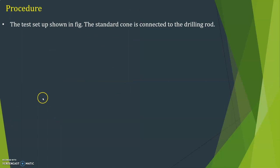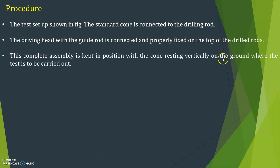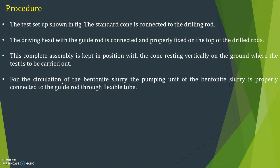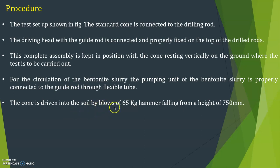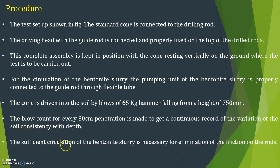To conduct the test, the standard cone is connected to the drilling rod. The driving head with guide rod is connected and fixed on top of the drilled rods, and this assembly is kept with the cone resting vertically on the ground where the test is to be carried out. For circulation of bentonite slurry, the pumping unit is connected to the guide rod through a flexible tube. The cone is driven into the soil by blows of a 65 kg hammer falling from a height of 750 mm.